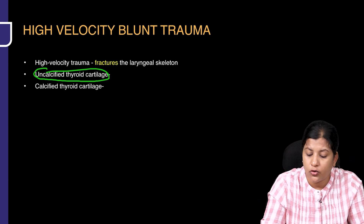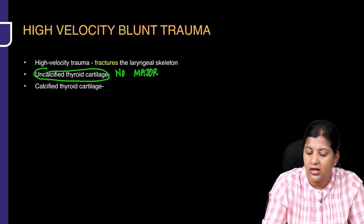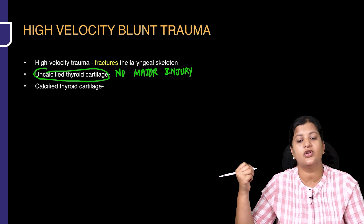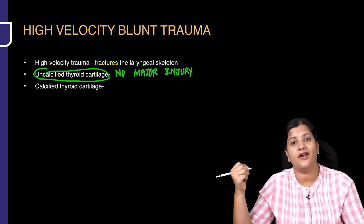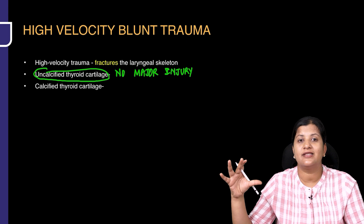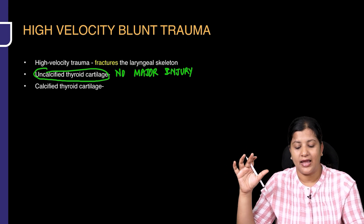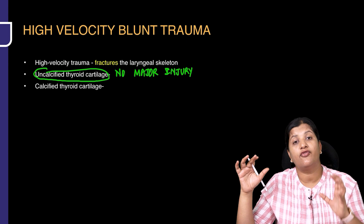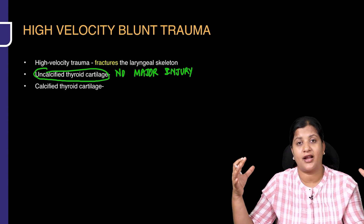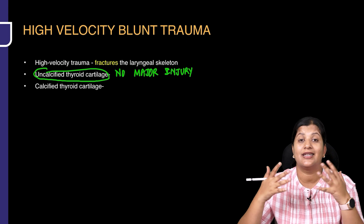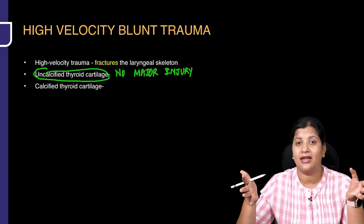So usually you do not see any major injury with an uncalcified thyroid cartilage. However, if it is a calcified thyroid cartilage, you can see fractures. The thyroid ala can get fractured, and the cricoid can get fractured.